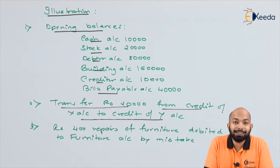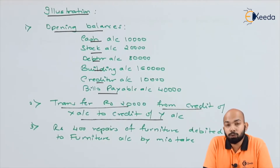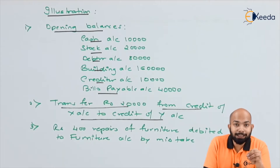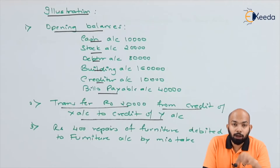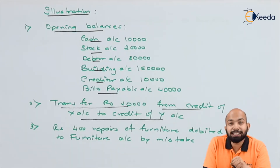The second transaction states a transfer of 20,000 from the credit of X account to Y account. That means something that was credited to X account will now be credited to Y account — so whatever was credited to X will be reversed and then credited to Y account.